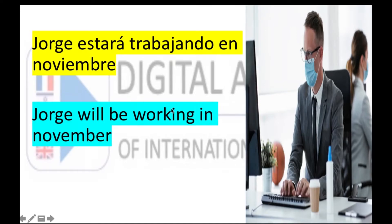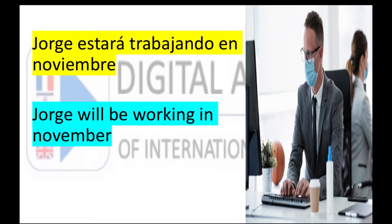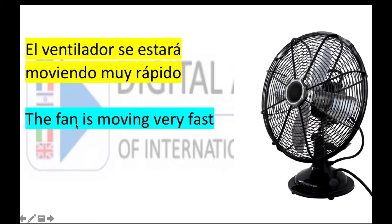Here, in that sentence, we see a verb in gerundio. Gerundio in Spanish ends in 'ando' or 'endo,' as I said in other videos. In English, the gerundio ends in 'ing.' What happens when a verb is in gerundio but I need to say it in future? The word in gerundio doesn't change. For example: 'Jorge will be working in November' — Jorge estará trabajando en noviembre. The word 'working' — trabajando — is the same as in the present. 'The fan is moving very fast' — el ventilador se estará moviendo muy rápido. You can use this word in present and in future in the same way.